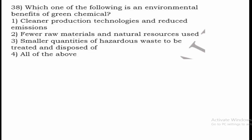Question 38: What benefits do you get from using green chemicals? There is a lot of pollution from chemical use — water, air, and other pollution. Green chemicals provide: cleaner production technologies and reduced emissions; fewer raw materials and natural resources used; and smaller quantities of hazardous waste to be treated and disposed of. All three statements are correct, so option 4 — all of the above — is the right answer.